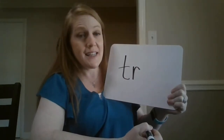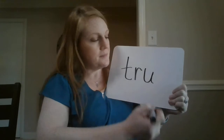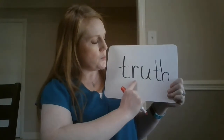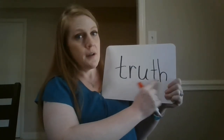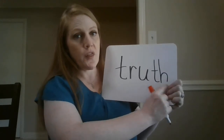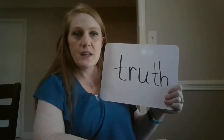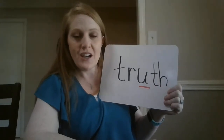Make sure that you're saying the sounds as I'm writing them. TR-OO — blend that together. True. What's this word? Truth. What is our OO spelling in the word truth? That's right, it is U by itself. Good job.